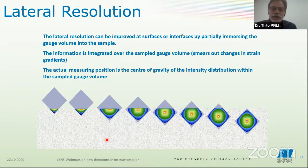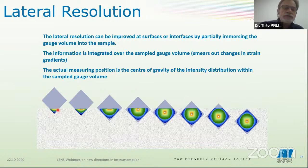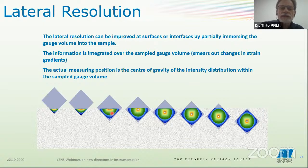Coming to lateral resolution: you can improve the lateral resolution. You shouldn't go too far, but you can go quite far depending on the grain size of your material. One way to improve the resolution at interfaces or surfaces is to penetrate your gauge volume — this gray box — successively into the sample. So imagine this is the 0.6 millimeter gauge volume, and you enter just a bit, improving your lateral resolution. The intensity distribution, the sampled gauge volume — the part of the gauge volume actually in the sample and diffracting — shows most intensity at the surface, which further improves resolution. This technique allows you to measure close to a surface or interface.